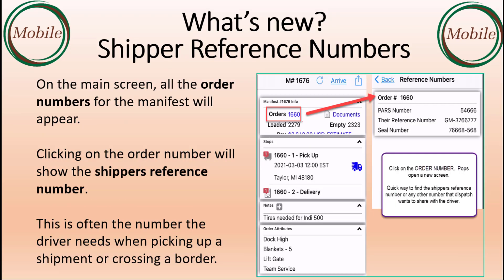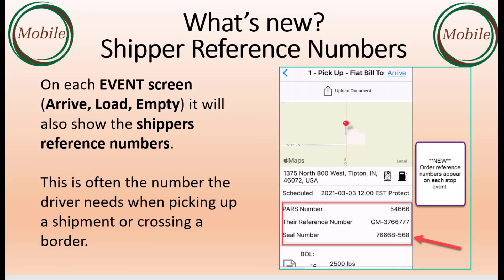On the main screen, all the order numbers for the manifest will appear. Clicking on the order number will show the shipper's reference number. This is often the number the driver needs when picking up a shipment or crossing a border. On each event screen — arrive, load, or empty — it will also show the shipper's reference number, which is again often needed when picking up a shipment or crossing a border.